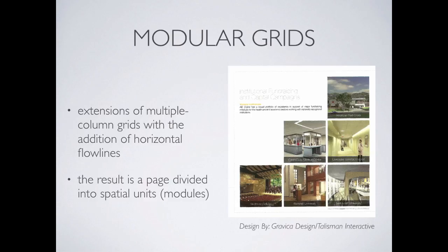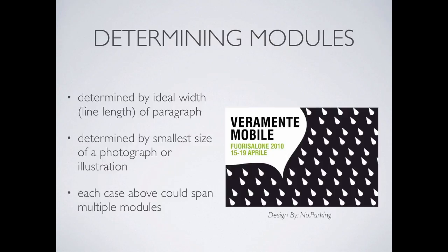Modular grids are extensions of multiple column grids with the additional horizontal flow lines. It's pretty hard to find a multiple column grid without a flow line anyway, so we end up lumping them together into modular grids. The page is set up of multiple little grid modules.